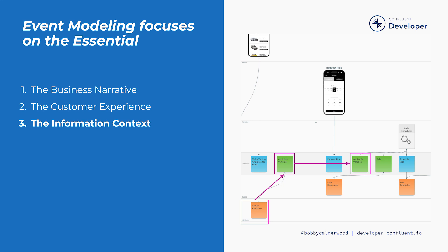Finally, the event model captures the information context of the business, meaning which teams own and which systems produce the various streams of events and their resulting read models. Other teams and downstream systems can then read these events and read models in order to automate specific tasks and integrate the various business processes together. For example, the available vehicle's read model is populated by events from the vehicle's event stream. This vehicle's event stream, with the associated commands and read models, could be owned and managed by the vehicle's team. A separate team responsible for scheduling rides could then use the available vehicle's read model as an input to the ride's schedule automated job, represented by a gear icon, in order to match vehicles with riders.